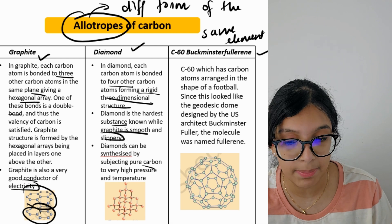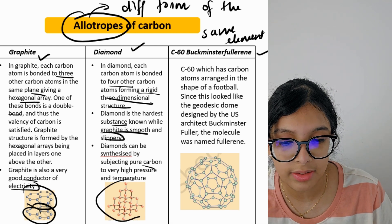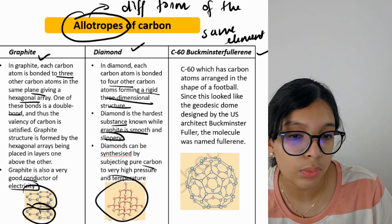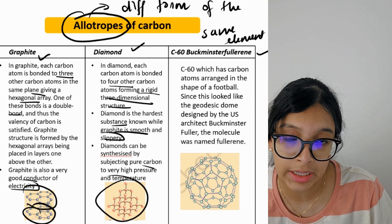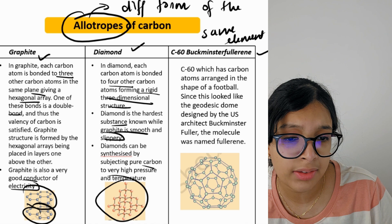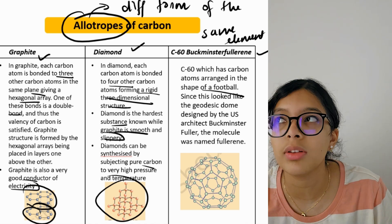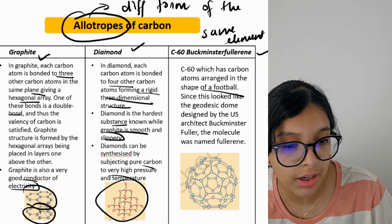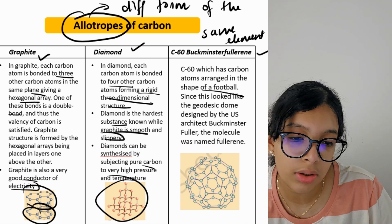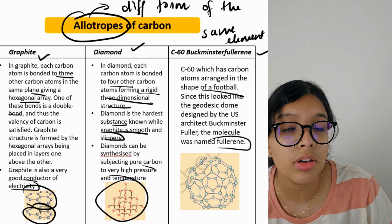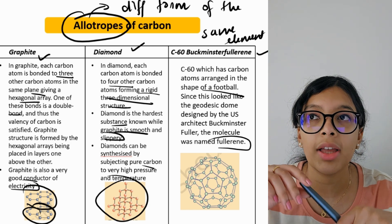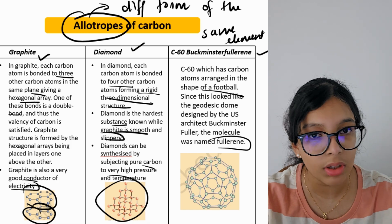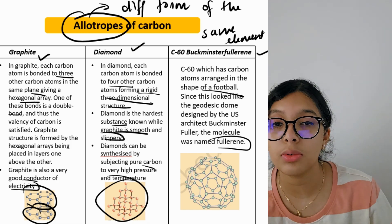You can see the structure of diamond — it's a 3D structure with one carbon atom attached to four others. The last allotrope is C60, buckminsterfullerene. Its carbon atoms are arranged in the form of a football. It was named after US architect Buckminster Fuller because it resembled a geodesic dome he designed. Remember: the allotrope of carbon arranged like a football is buckminsterfullerene.